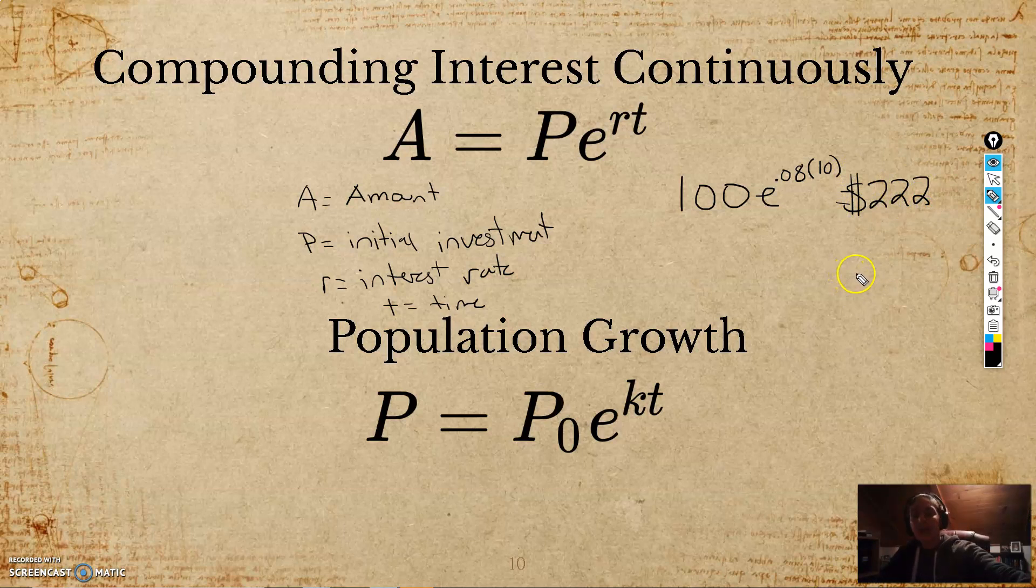Oh, after 10 years, my $100 investment would grow to about $222, approximately. So, we just put $100 in the bank, 8% interest, we let it grow over 10 years. We'd have $222, and it's all said and done. Not bad.